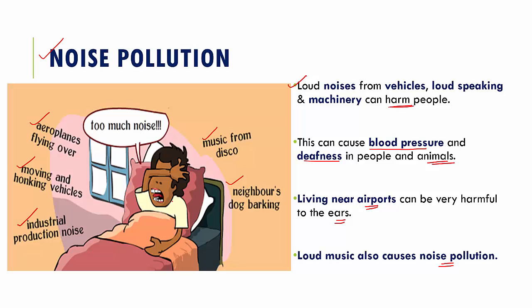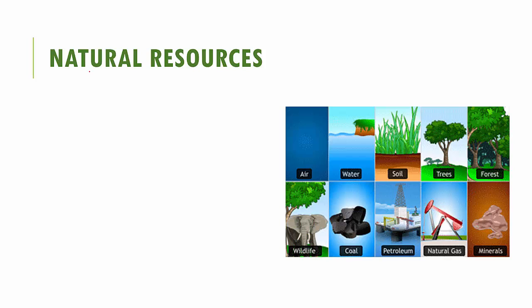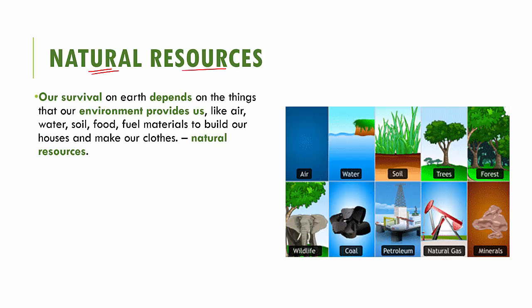This wraps up the part about pollution. Let's move on to the next part of the chapter which is natural resources. What are natural resources? Our survival on earth depends on the things that our environment provides us — for example, it gives us air, water, soil, food, fuel and other materials with which we can build our houses and make our clothes. All of these things are called natural resources. You can see in this picture all the natural resources that our environment is providing us.